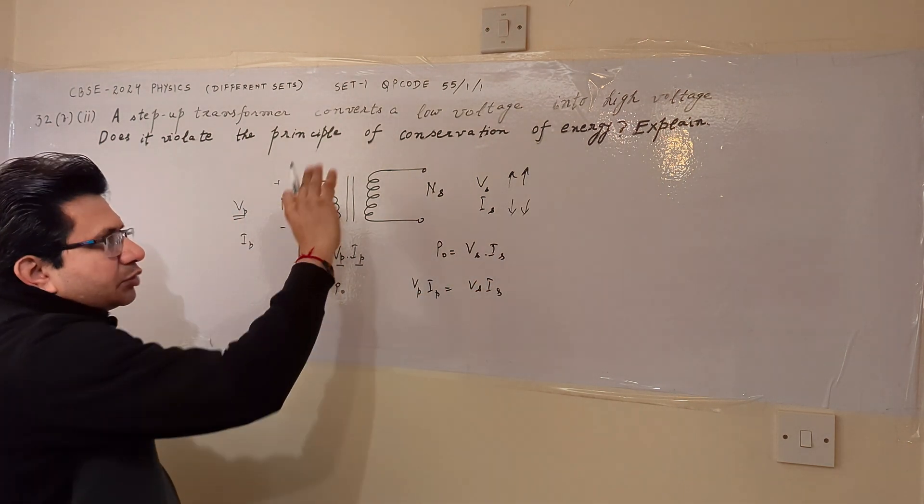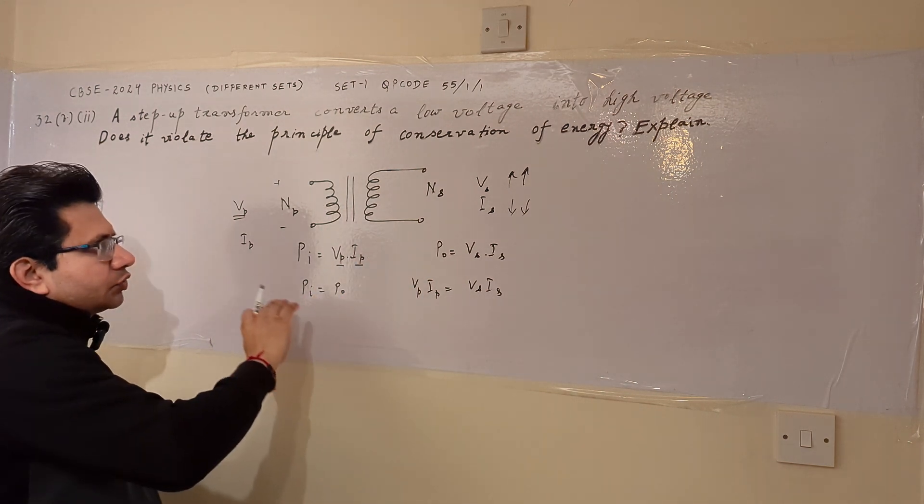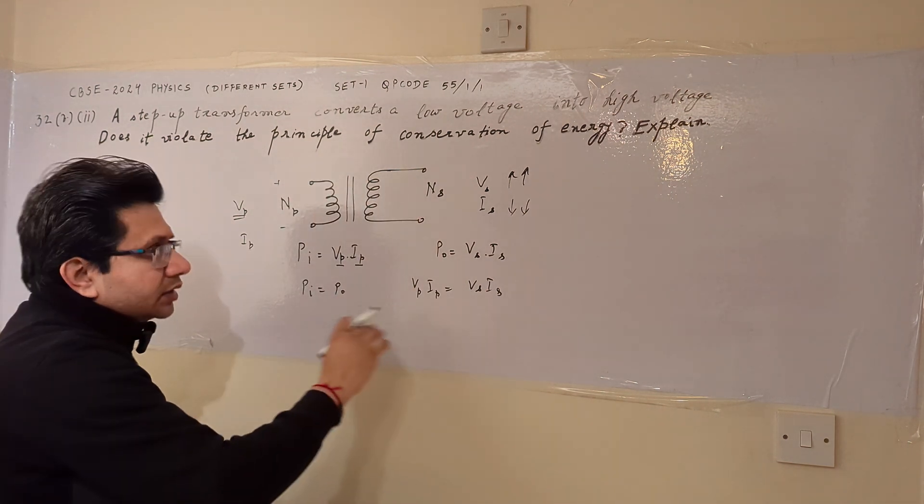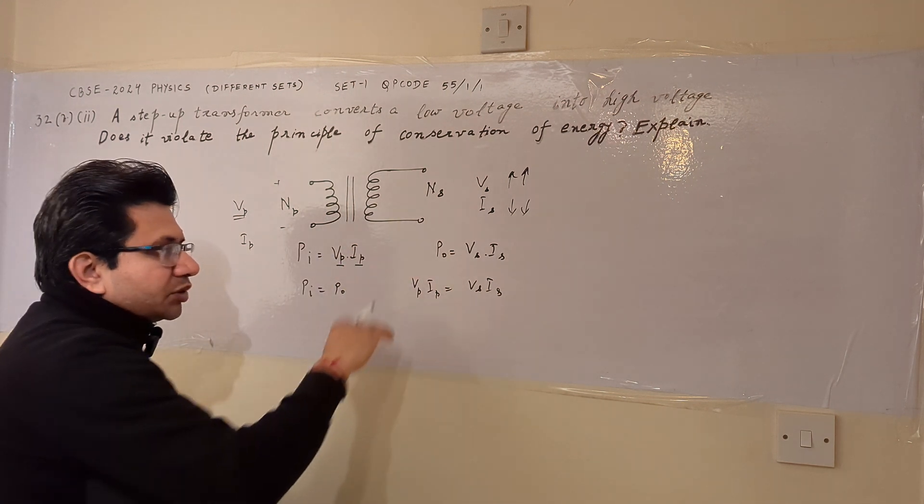Whether the voltage is stepping up or down, it does not matter. In a step down transformer, the voltage goes down. In a step up transformer, the voltage goes up. Correspondingly, the current compensates it.